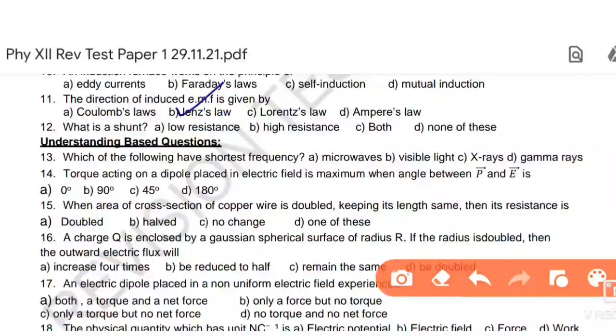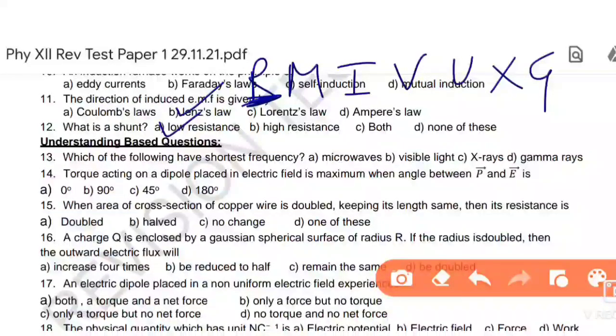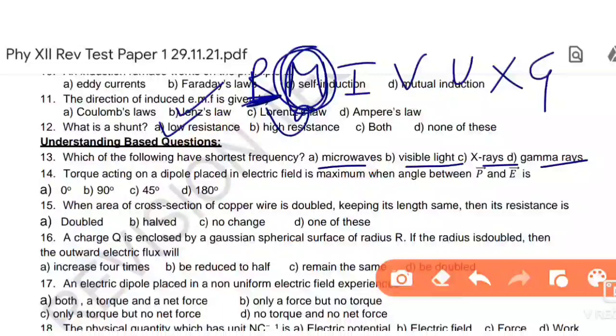Next, what is the shunt? Shunt is a low resistance device. Which of the following has the shortest wavelength? Shortest wavelength we find out. R means radio wave. Radio wave wavelength is highest, its frequency is lowest. But there is no mention of radio wave here. After radio wave comes microwave. Its frequency is lowest. So microwave is here. Option number A is the right answer.